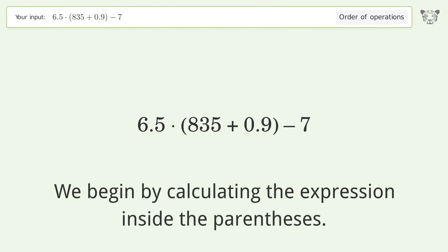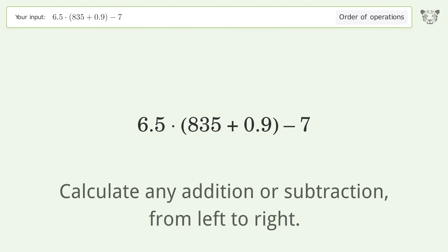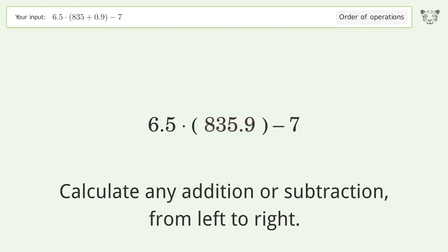We begin by calculating the expression inside the parentheses. Calculate any addition or subtraction from left to right: 835 plus 0.9 equals 835.9.